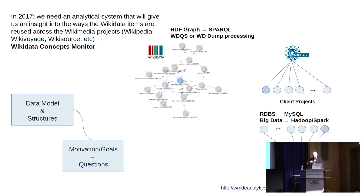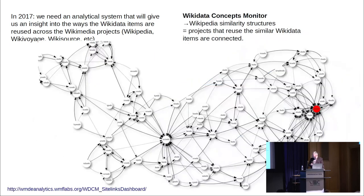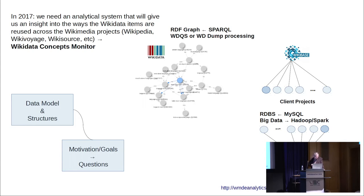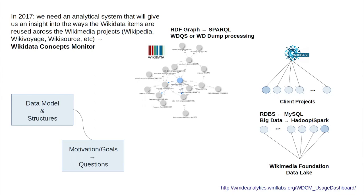There is Wikibase and the client-side tracking mechanism installed in almost all wikis, which tracks Wikidata usage on each project. Every time an item is used in an infobox or another way, a row enters a huge SQL table tracking the usage of that item. Immediately we faced a data engineering problem — we're talking about hundreds of huge SQL tables, and we had to do machine learning and statistics across all the data together. So we needed to transfer data from Wikibase to the Wikimedia Foundation data lake, which is a big data storage using Hadoop and Hive tables.